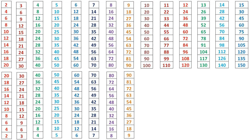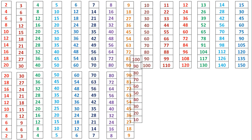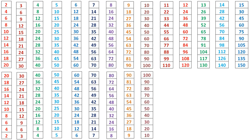9 times 10 is 90, 9 times 9 is 81, 9 times 8 is 72, 9 times 7 is 63, 9 times 6 is 54, 9 times 5 is 45, 9 times 4 is 36, 9 times 3 is 27, 9 times 2 is 18, 9 times 1 is 9.